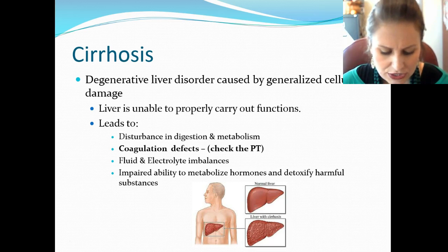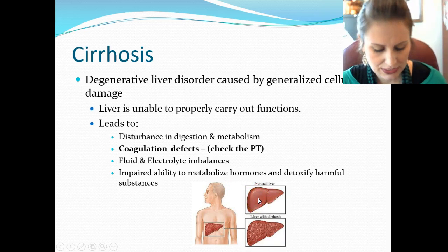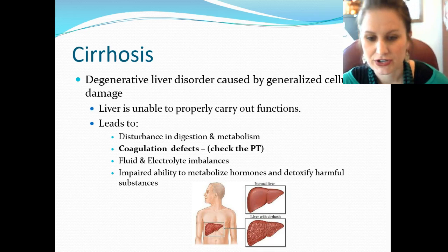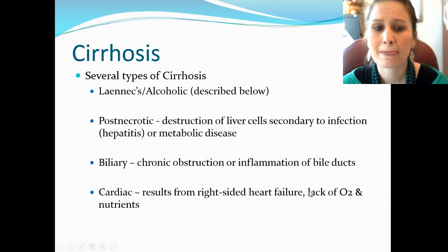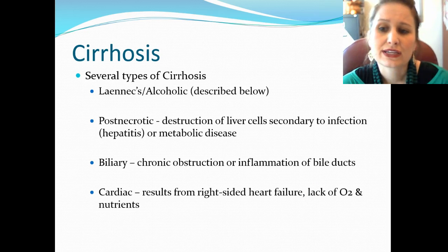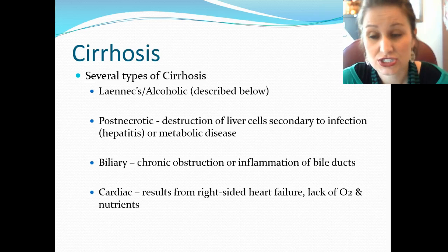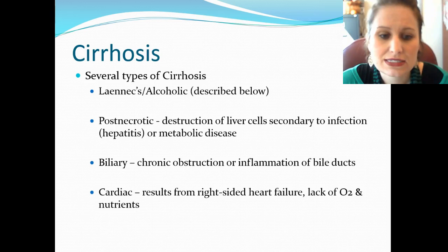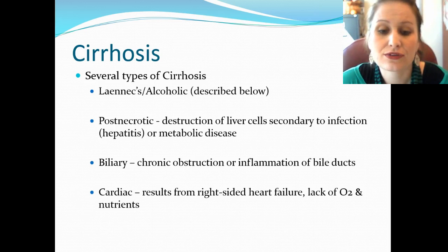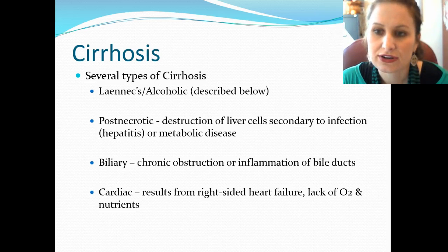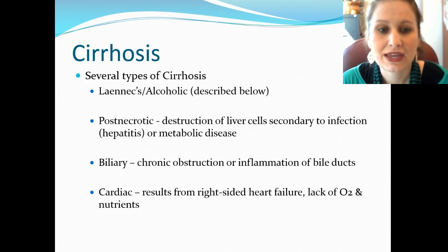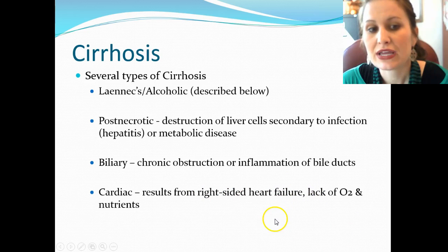A normal liver is very smooth; a cirrhotic liver has more of a hobnail appearance and doesn't look healthy at all. There are several types of cirrhosis: Laënnec's or alcoholic is the most common. Post-necrotic involves destruction of liver cells secondary to infection or metabolic disease. Biliary involves chronic obstruction or inflammation of the bile ducts. Cardiac cirrhosis results from right-sided heart failure — lack of O2 and nutrients causes backup through the inferior vena cava into the liver.